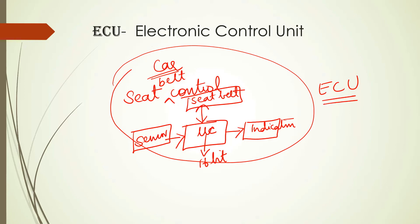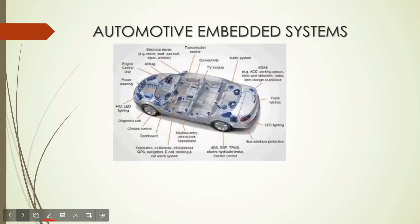In your automotive embedded systems — for example, in your car — you have many such ECUs. Let us see what the various ECUs are. You can look into this picture. You have your ECU for brake control, for ignition control, for engine control, for power steering, for TV if you have one inside, for your audio system, and for your airbag. For all these things, you have ECUs.